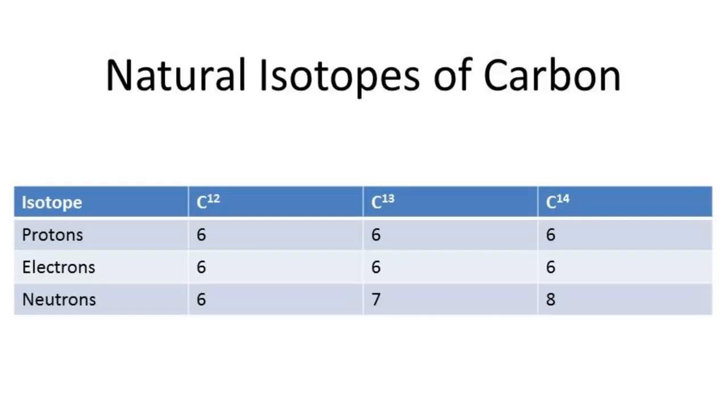Carbon is a great example of this, with three naturally occurring isotopes: carbon-12, carbon-13, and carbon-14, which each have six protons and six electrons, but six, seven, and eight neutrons, respectively.